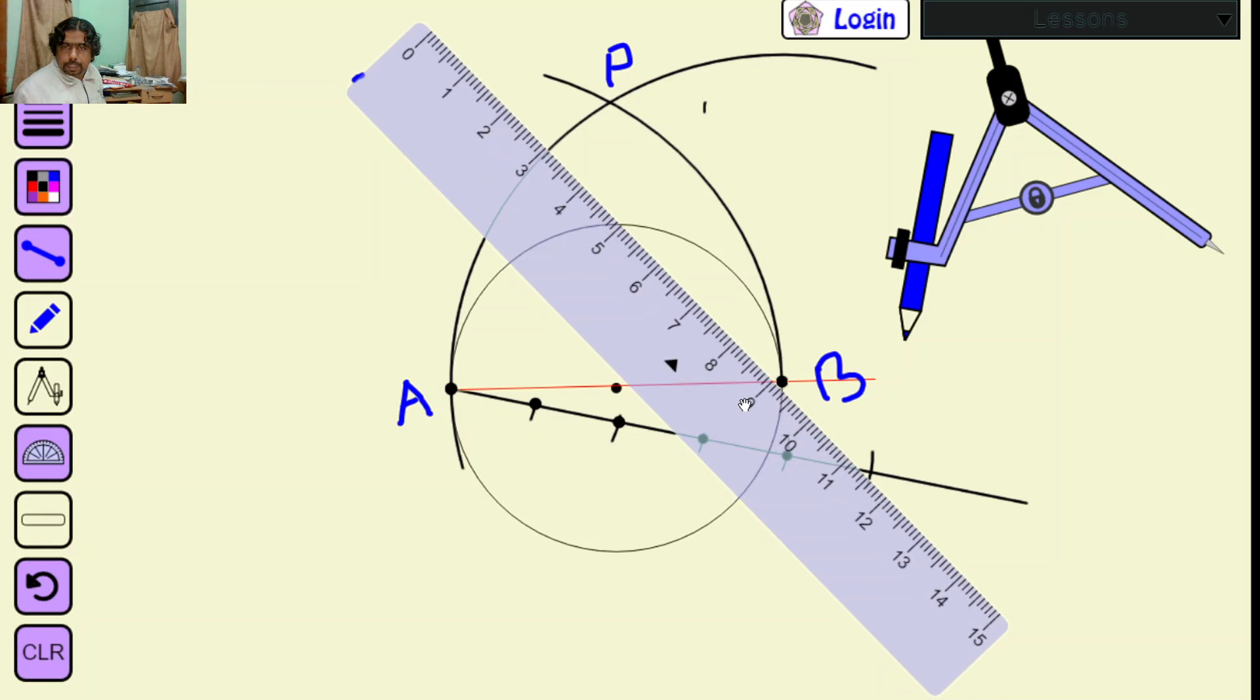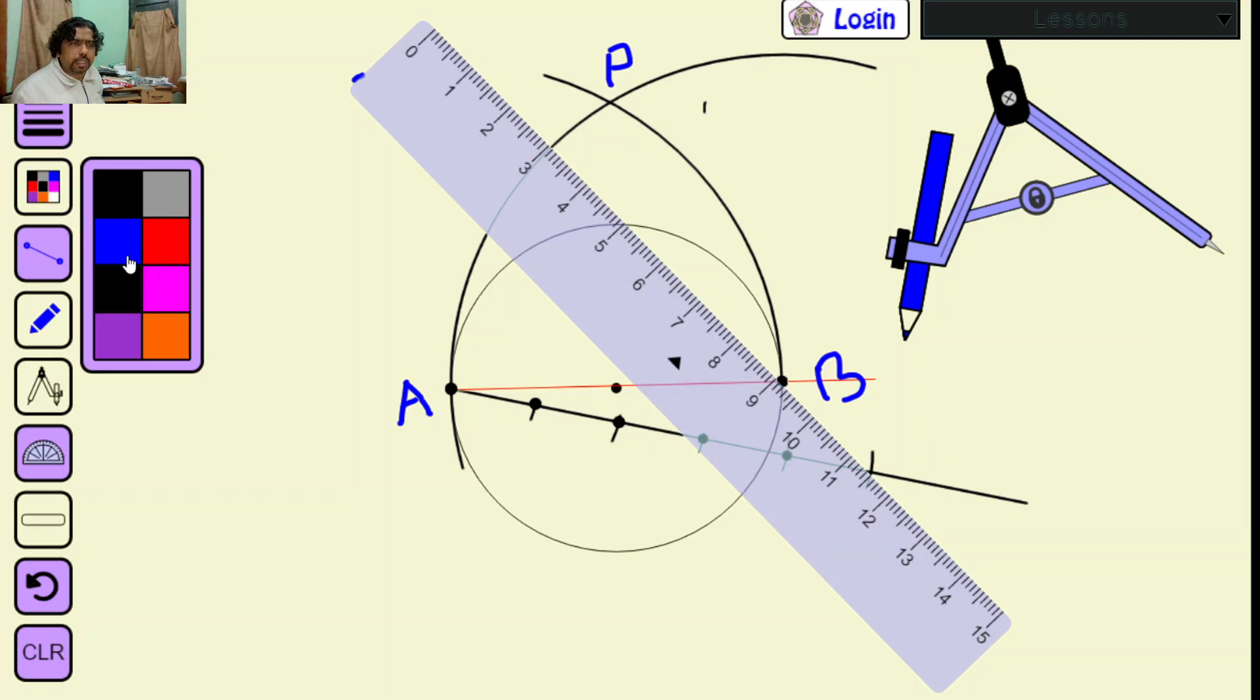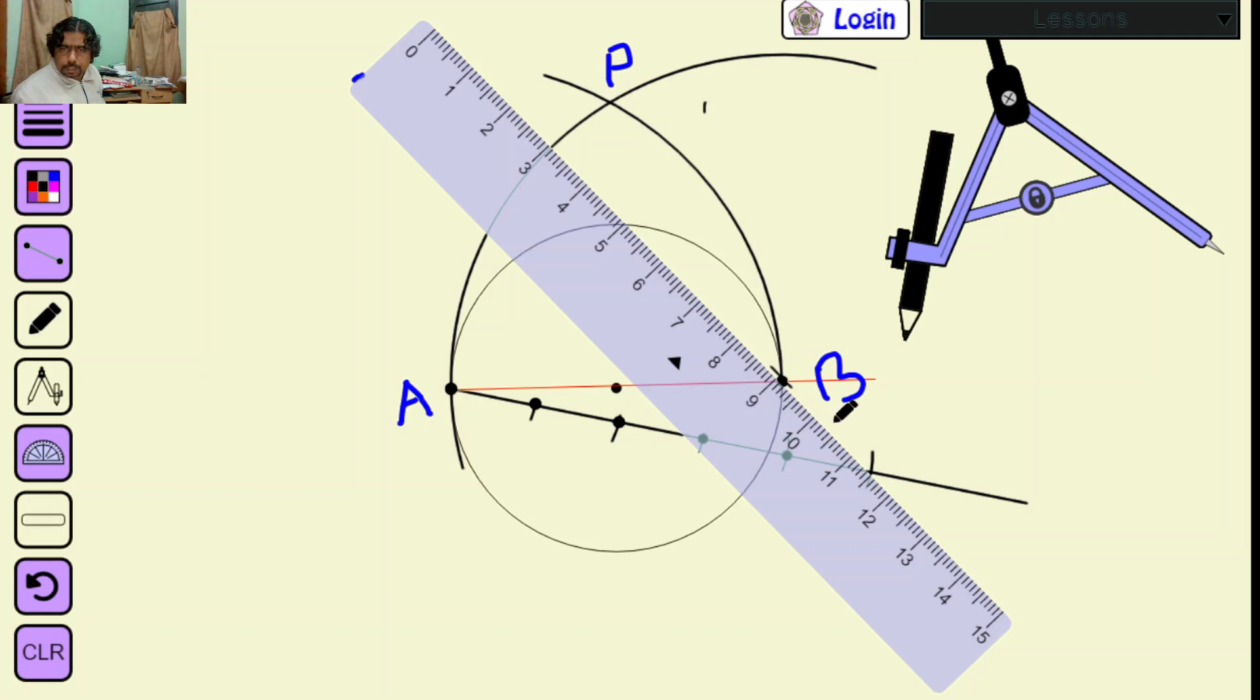I am doing this with a scale because I don't have a mini drafter here. I am using multiple colors just for clarity. This is the line in green color.